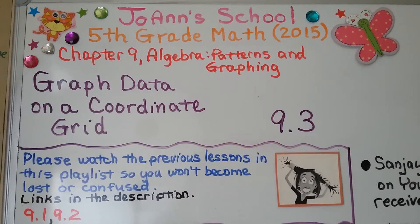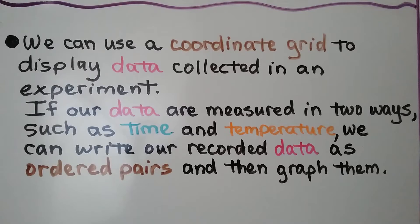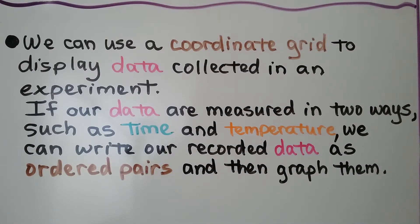Lesson 9.3: Graph Data on a Coordinate Grid. We can use a coordinate grid to display data collected in an experiment. If our data are measured in two ways, such as time and temperature, we can write our recorded data as ordered pairs and then graph them.